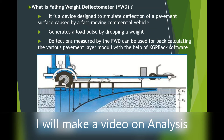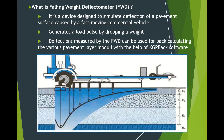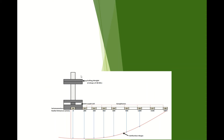You can see this is the instrument, this is the dropping weight, and this is the plate — 300 mm diameter. Before the FWD, a normal vehicle should be present to move, because it is a dynamic test.